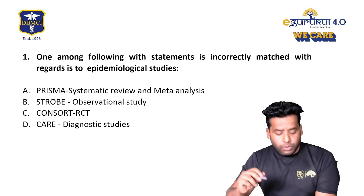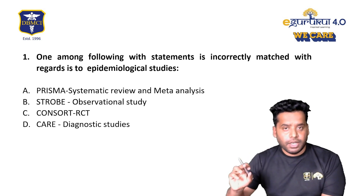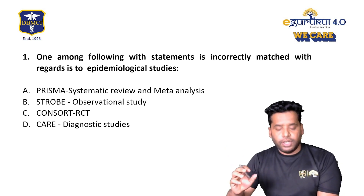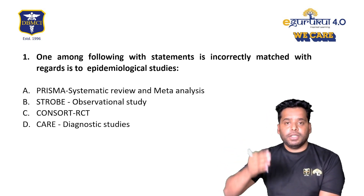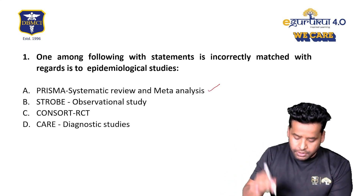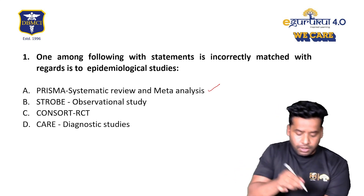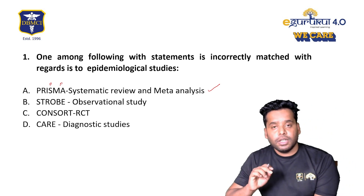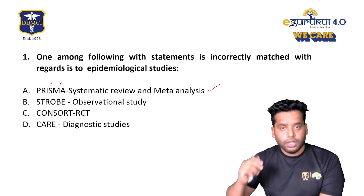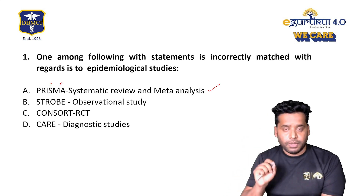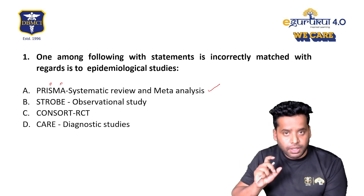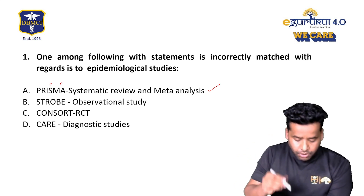Question number one: one among the following statements is incorrectly matched related to the guidelines for epidemiological methods. Different epidemiological studies are monitored by certain guidelines. For meta-analysis, PRISMA is the guideline that helps in reporting systematic review and meta-analysis — what guidelines to follow, what exclusion and inclusion criteria to apply. STROBE is for reporting observational studies in epidemiology.